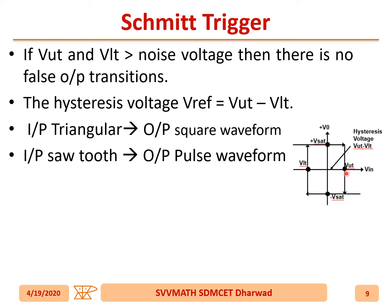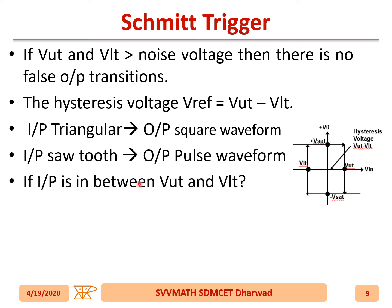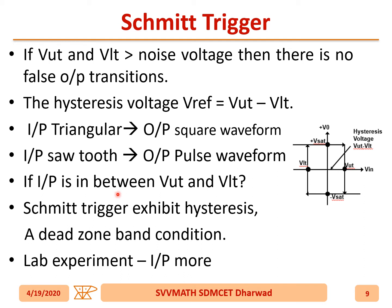The hysteresis voltage V_reference equals V_UT minus V_LT. If the input is a triangular wave, the output will be a square wave. If the input is a sawtooth wave, the output will be a pulse waveform. If a small voltage between V_UT and V_LT is given as input to the Schmitt trigger, most students make this mistake in the lab exam and get no output. Always remember the input given to the Schmitt trigger should be more than V_UT and V_LT.